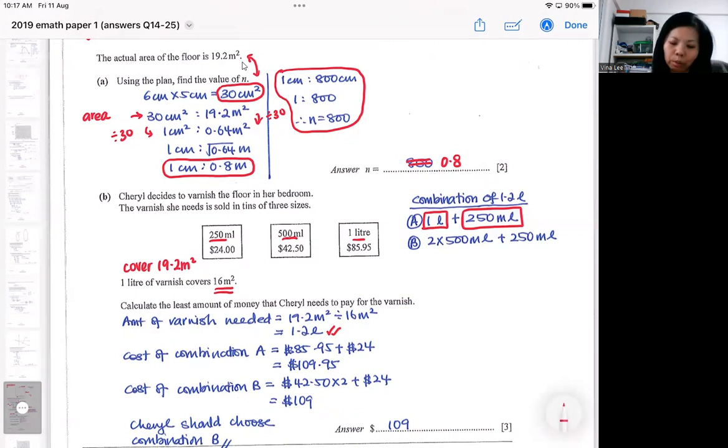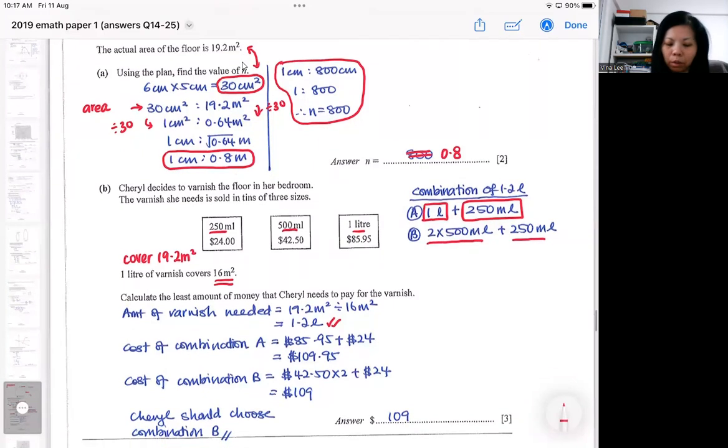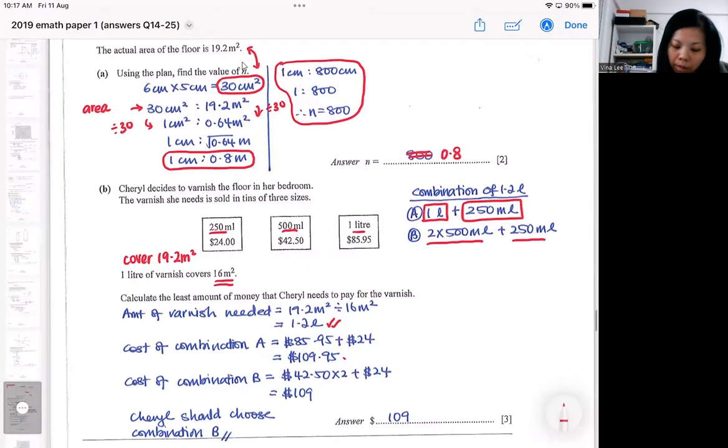One way is to buy a 1 liter and a 250 ml, which a lot of people will do that. Another way would be to buy two small 500 ml plus 250 ml. So you should work out the combination. If you go for 1 liter and 250 ml, this is the amount you pay, which a lot of people, they will instinctively buy that.